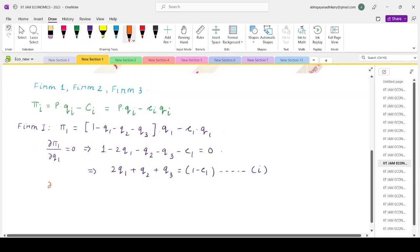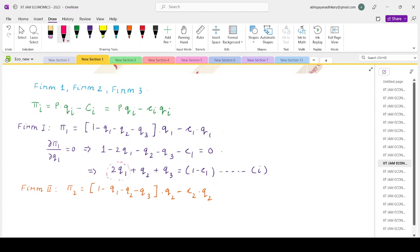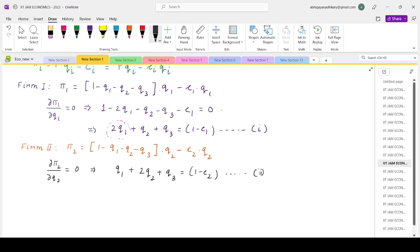In a similar way, go for firm 2. Firm 2 will be pi 2 with a very exact similar expression: 1 minus Q1 minus Q2 minus Q3, the price, multiplied with its own quantity minus C2 multiplied by Q2. If you understood the calculation for the first firm, when we were differentiating with respect to Q1, there is a 2Q1 component in the reaction function, whereas the other quantities are just Q2 and Q3. If we do the same del pi 2 by del Q2 for firm 2, the expression would be Q1 plus 2Q2 plus Q3 equals 1 minus C2.